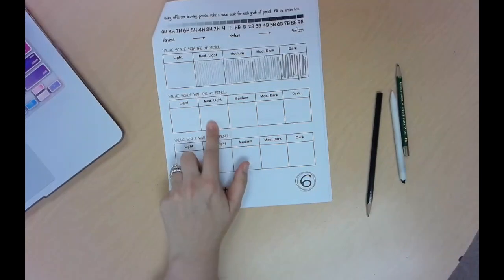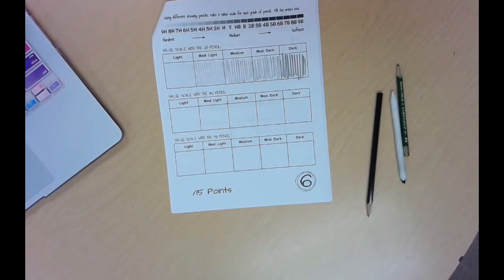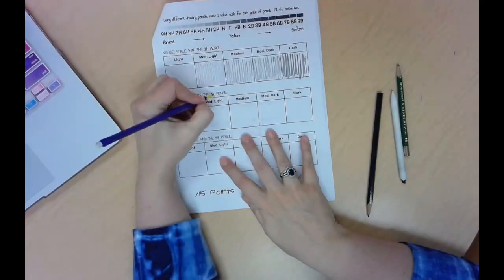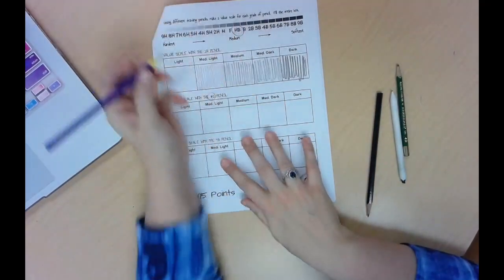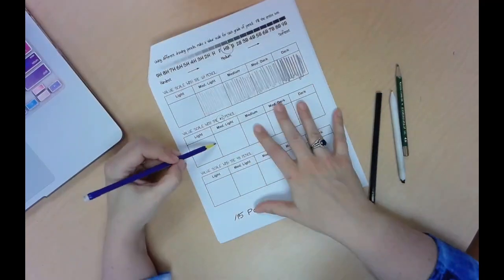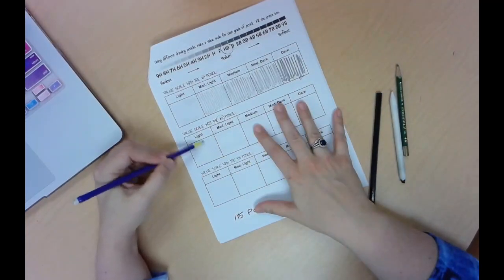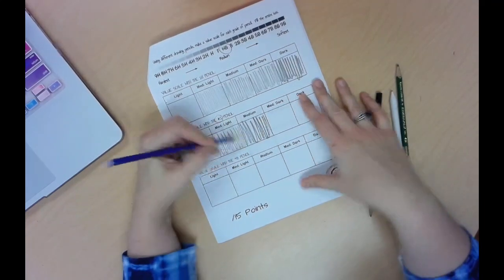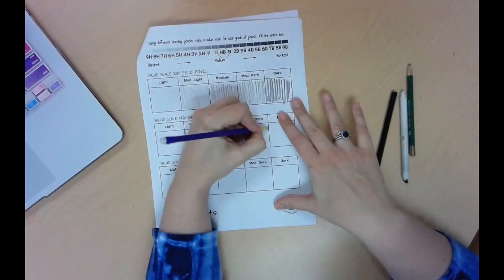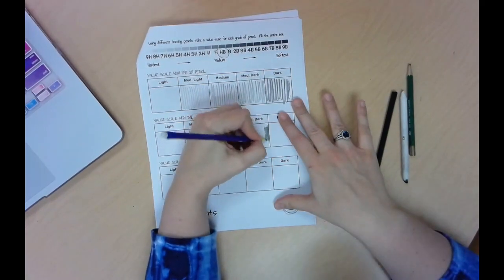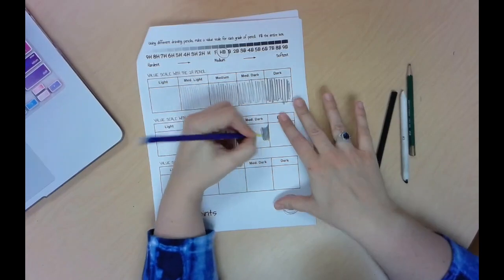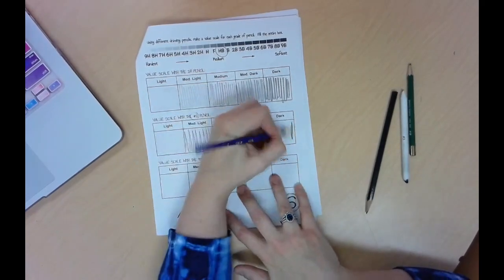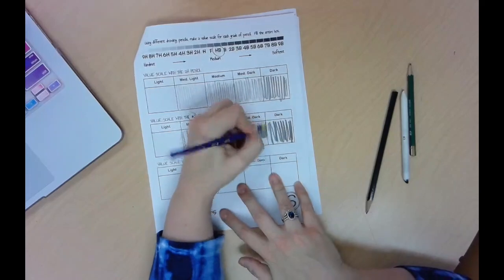Then the next one says you're going to use a number two pencil. So a number two pencil just means that you are using a regular classroom pencil. Another name for number two pencil is an HB. They're the same thing. So I'm just going to use a regular classroom pencil and I'm going to do the same thing where I go from light to dark. Now once again I'm not doing a nice job but I'm going to show you what I expect. So when I say you're going to color it nicely, you're going to color in the whole box nicely like this. But for the purpose of this video I'm not doing that. So there's my second one.